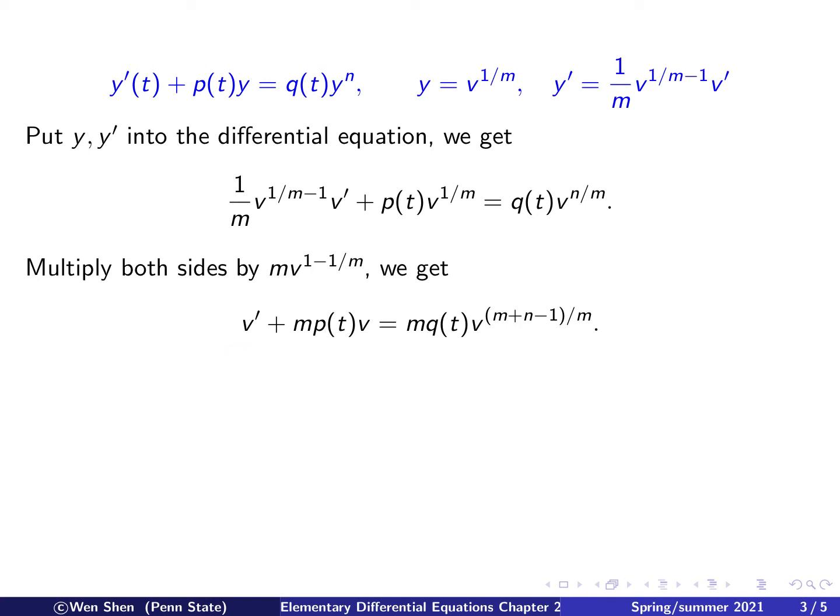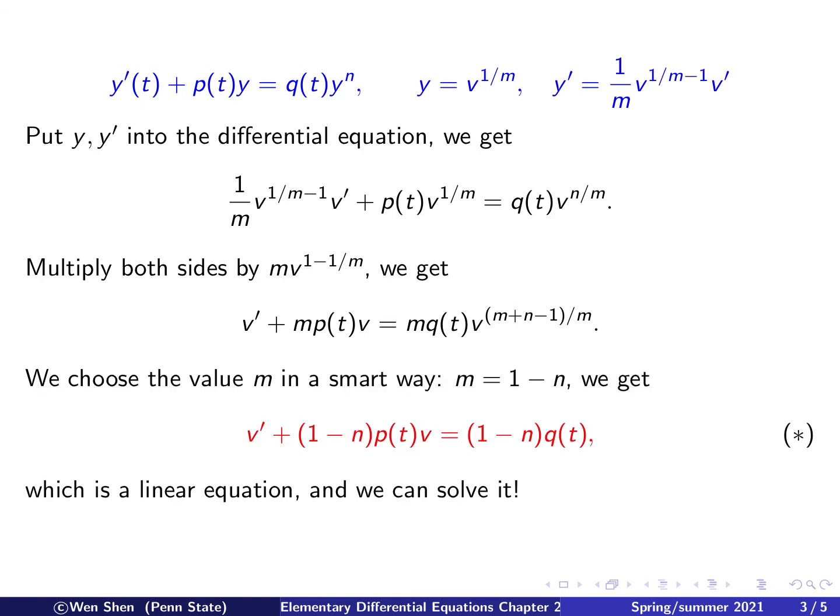We see now the left-hand side is a linear expression of v. But the right-hand side, in general, is not, because this term might not be 0 or 1. Now, we can choose the value for m. We choose it in a smart way such that the power here becomes 0. So the choice for m will be m is 1 minus n, and then this is 0.